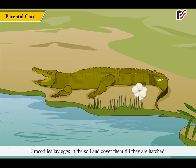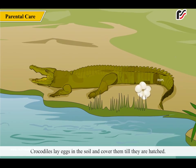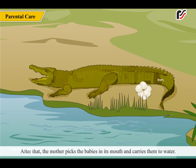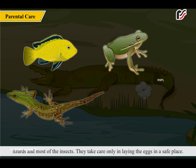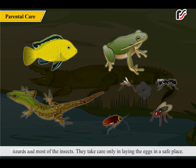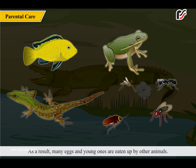Crocodiles lay eggs in the soil and cover them till they are hatched. After that, the mother picks the babies in its mouth and carries them to water, guarding them for several months. This type of care is not seen in some animals such as fish, frogs, lizards and most insects. They take care only in laying the eggs in a safe place. After that, they pay no attention to the eggs, and as a result many eggs and young ones are eaten up by other animals.